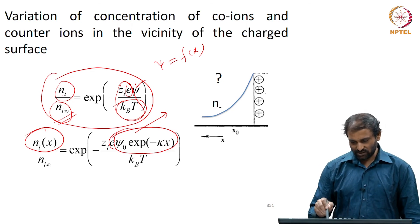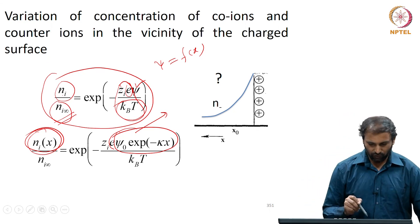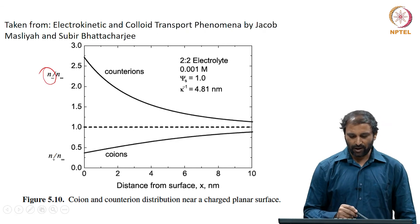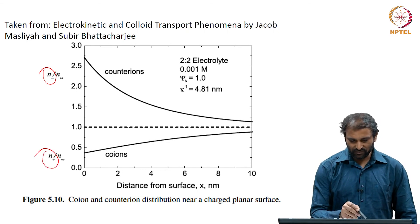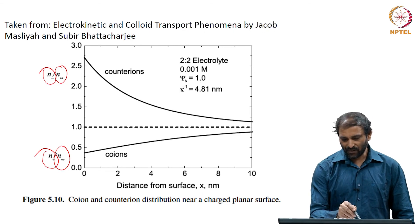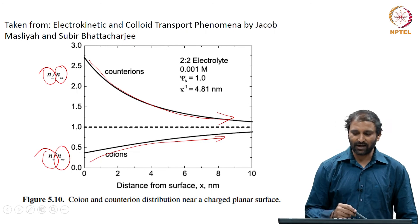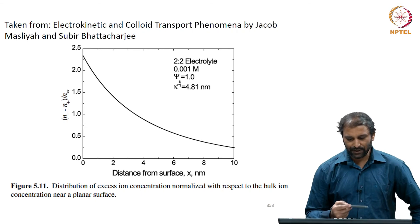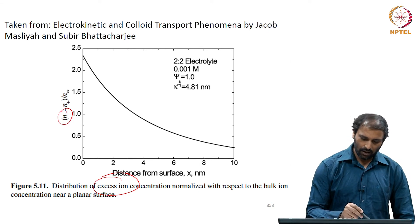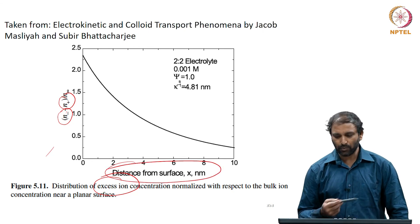From this approach we can calculate the concentration of counter-ions and co-ions, both scaled with n_infinity, the bulk concentration of the electrolyte. We can find how the counter-ion concentration decreases and how the co-ion concentration varies as we move away from the charged surface. Also of interest is the distribution of excess ion concentration, given by n_minus minus n_plus — the difference in concentration between co-ions and counter-ions — and how that varies with separation distance, all calculable from these simple formulations.